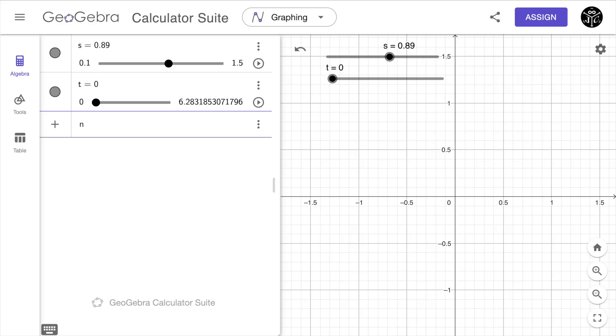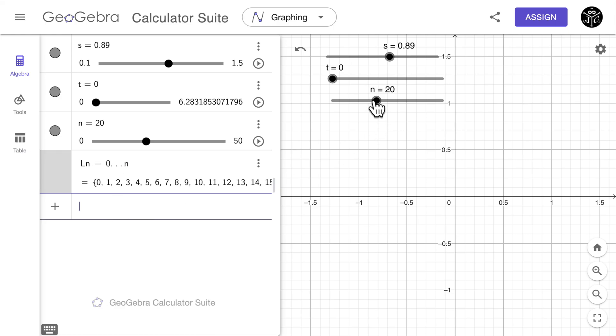I'm going to define also an n equal to a slider from 0 all the way to 50 with an increment of 1. And this slider is going to determine how many circles I'm going to plot on my animation. Now I'm going to define a list ln equal to 0 dot dot dot n and this is going to produce a list of numbers that depends on the slider n. So for example if n is equal to 10 I'm going to have 11 elements starting from 0 all the way to 10.